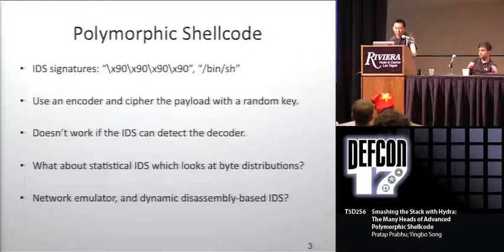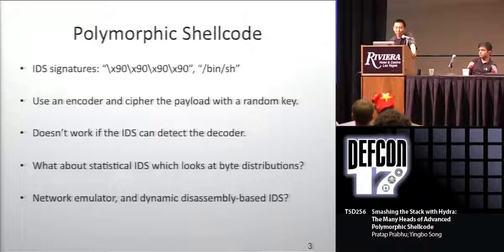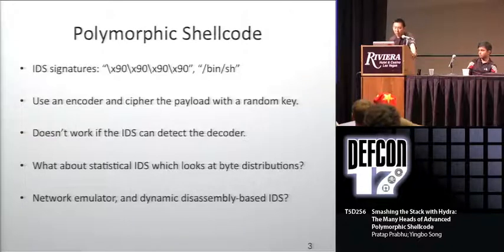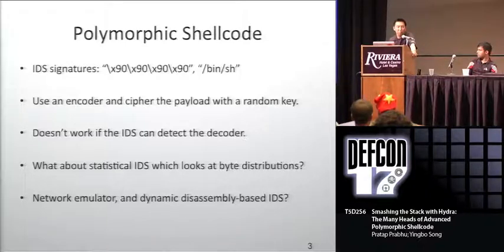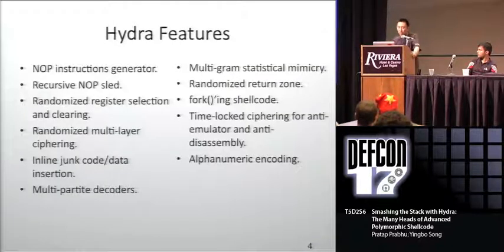There are also statistical IDS systems that look at byte distributions and multigram byte distributions. There are also new IDS systems based on dynamic emulation — an actual sensor on the network inline with your traffic, trying to execute all the bytes that come across. People have gotten this to work at 100 megabit line rates, which is very impressive. There's also dynamic disassembly-based IDS, which dynamically disassembles all network traffic and looks for large basic blocks, since normal data should not disassemble into large chunks of executable code.